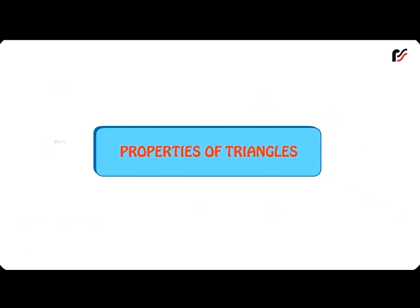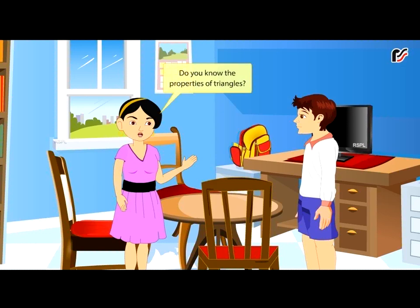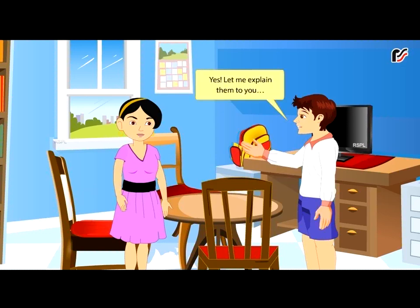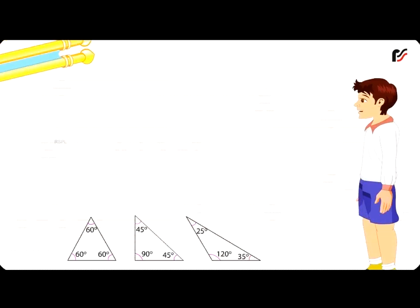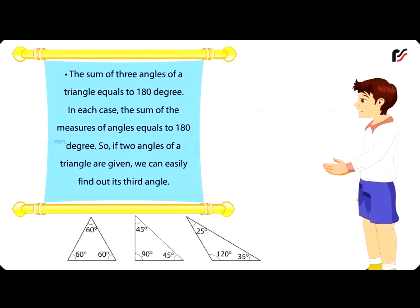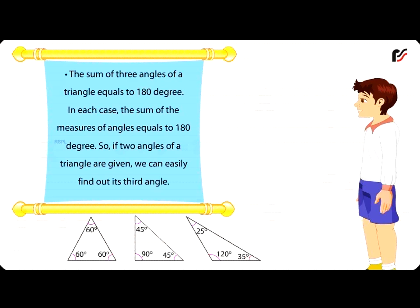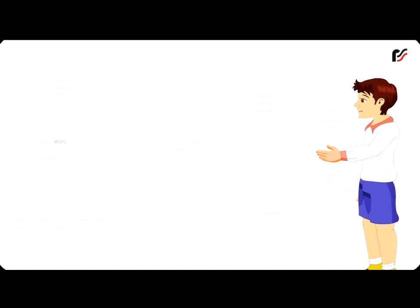Properties of triangles — do you know the properties of triangles? Let me explain them. The sum of three angles of a triangle equals 180 degrees. In each case, the sum of the measures of angles equals 180 degrees. So if two angles of a triangle are given, we can easily find out its third angle.